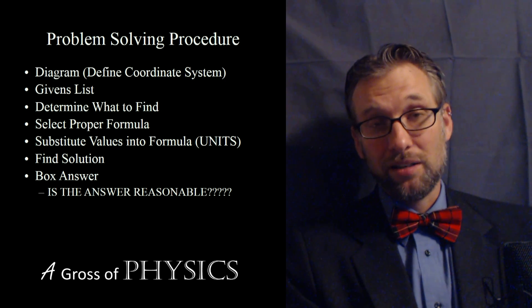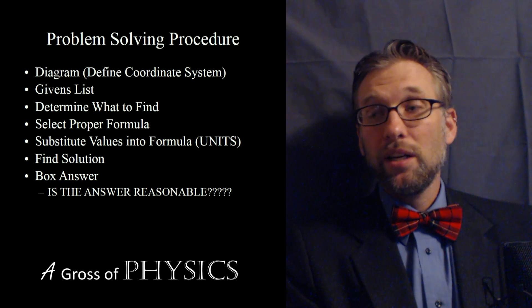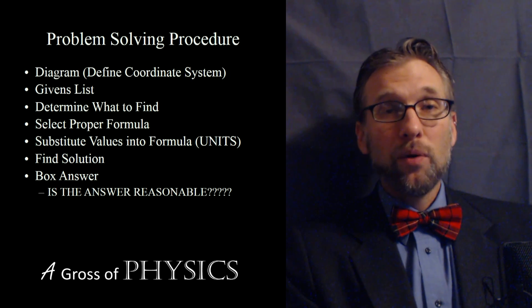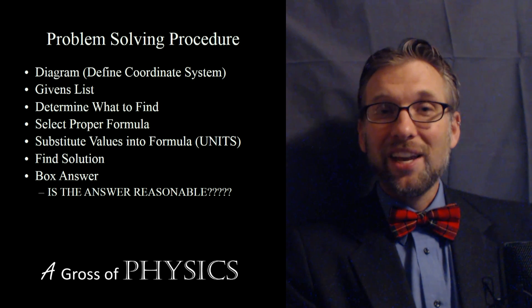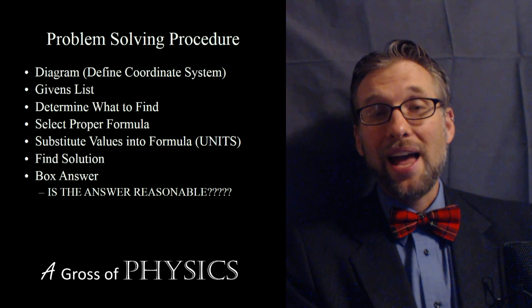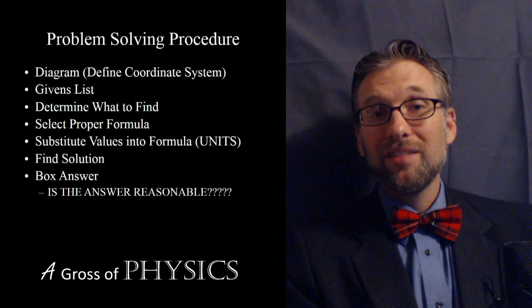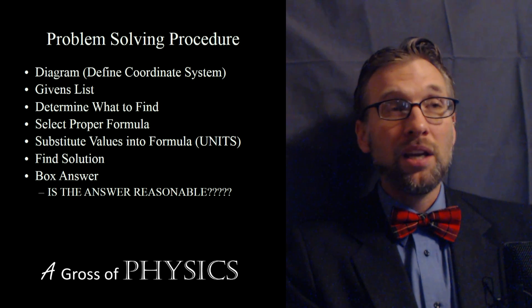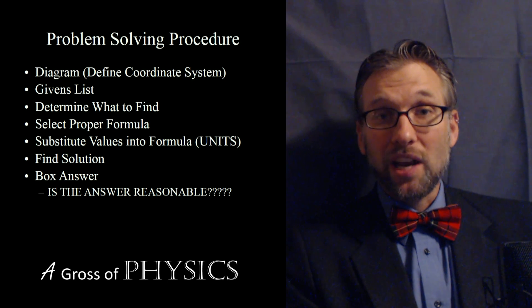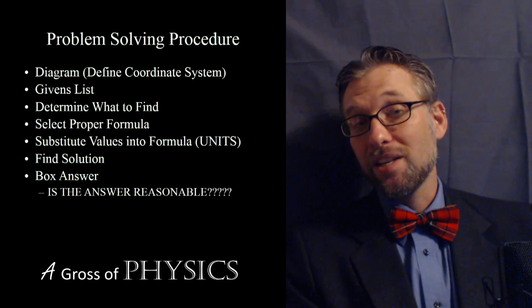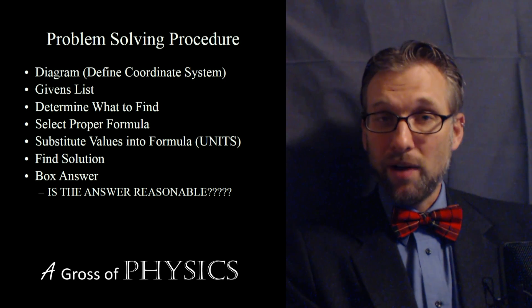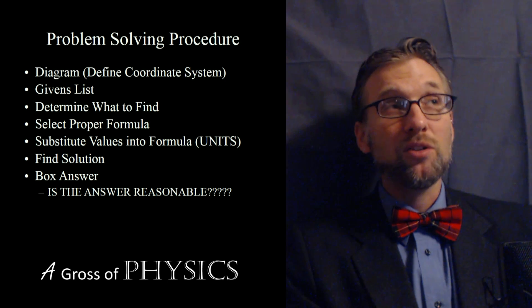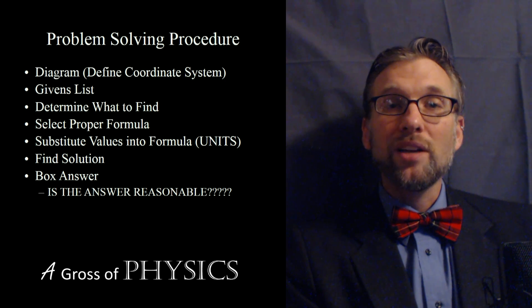Once you're done with that, we're going to list a givens list. All the information that you know will be listed in a chart. I'll put all the variables that I know with their symbols and the units associated with them. One of the things that gives away a lot of these variables is the unit that they have. If something's in meters per second, it's going to be a velocity. If it's meters per second squared, that will tell you right away it's an acceleration.